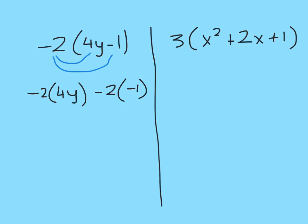Okay, so minus 2 by 4y gives me minus 8y. Minus 2 by minus 1. Remember our rule. Minus by minus gives me plus 2. And that's my answer.